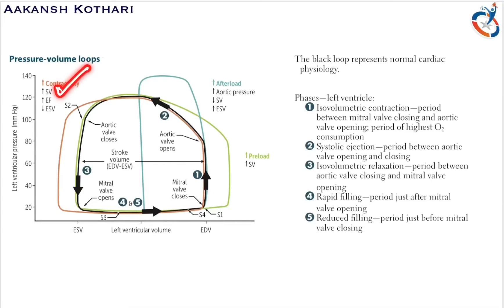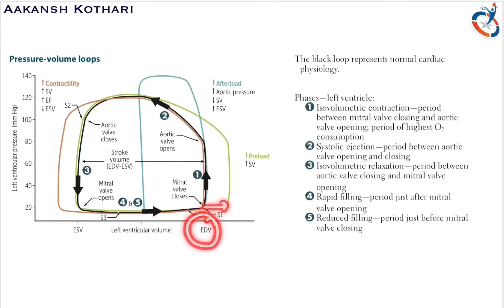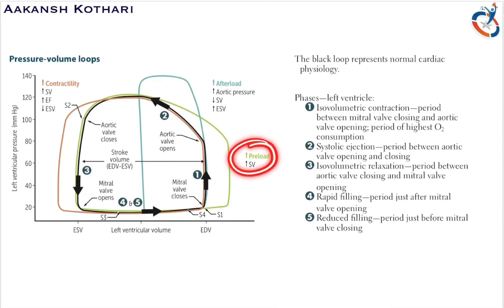In preload, the end diastolic volume increases rather than the end systolic volume decreasing, so the end systolic volume remains the same but the end diastolic volume increases, again resulting in an increase in stroke volume. In contractility the end systolic volume decreases; in preload the end diastolic volume increases.